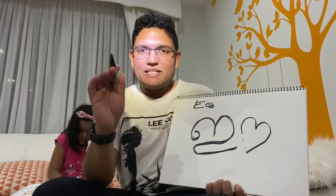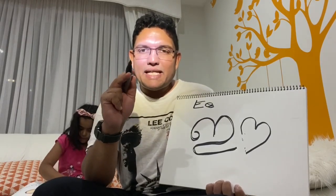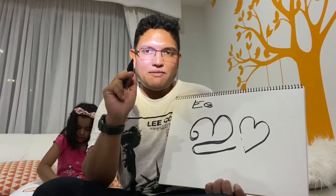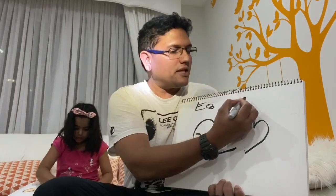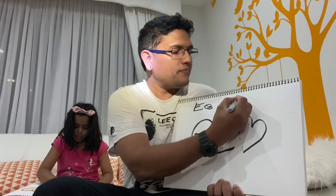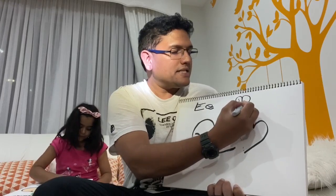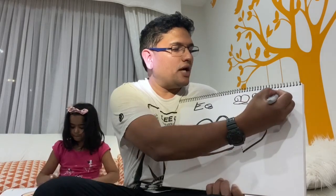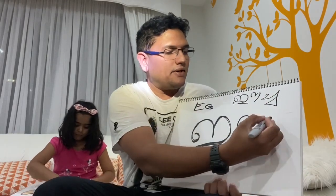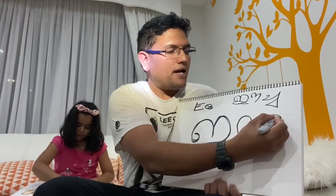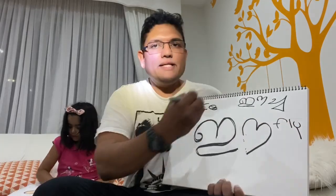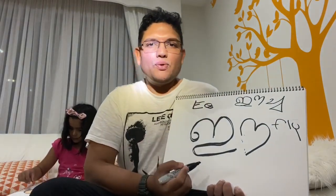Eecha is nothing but a fly — you know, the house fly, mosquito and all these are flies. So ഈ with Eecha is Eecha — that's a fly. So let's write Eecha. That's ഈ and there is Eecha, so that is a fly.